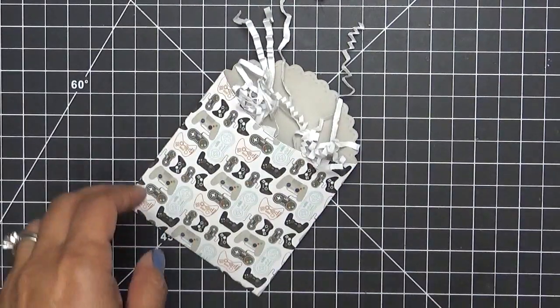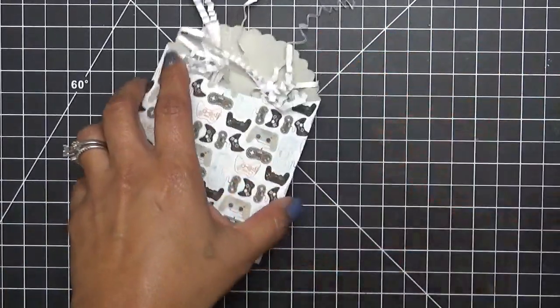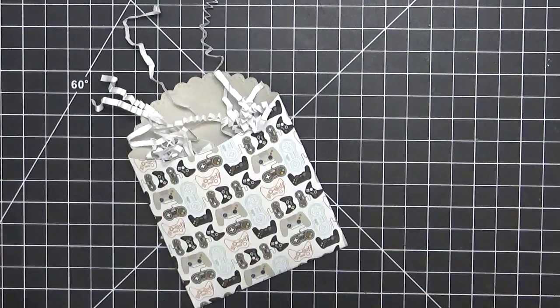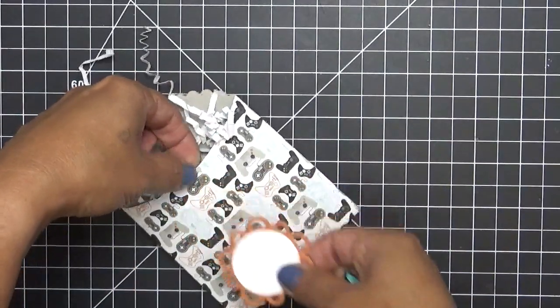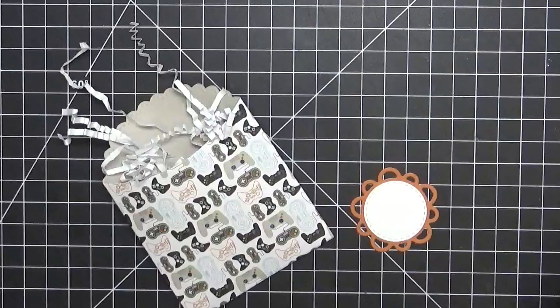And then we're going to go ahead and add this cute little Reese's. But before we do that, let me go ahead, we're going to put this hanging from here. So I'm going to go ahead and make a hole on this sleeve really quick.